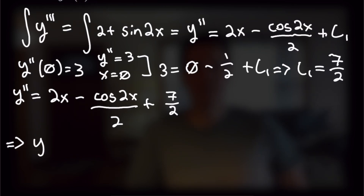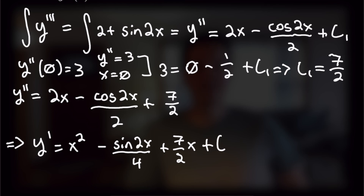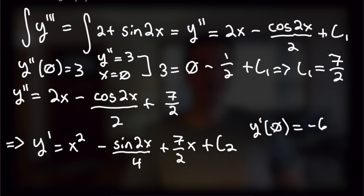Taking another antiderivative, y prime equals x squared minus sine of 2x over 4 plus 7 over 2 times x plus c2. Using the initial condition y prime at x equals 0 equals negative 6: negative 6 equals 0 minus sine(0) over 4 plus 0 plus c2. Since sine of 0 is 0, we get c2 equals negative 6. So y prime equals x squared minus sine of 2x over 4 plus 7 halves x minus 6.